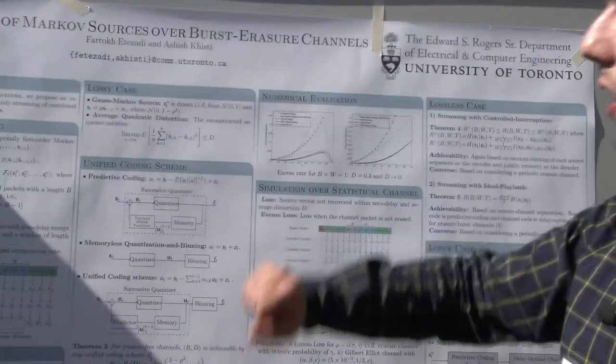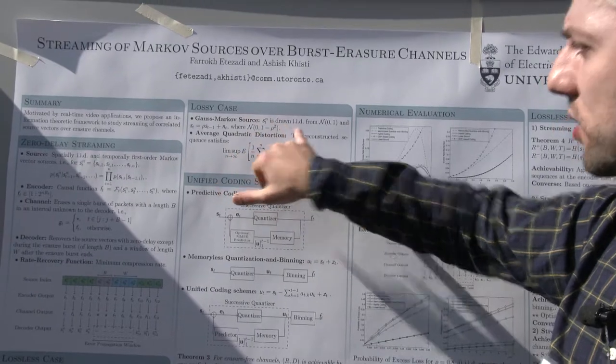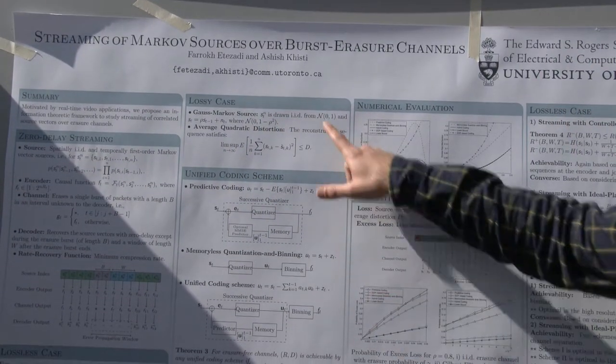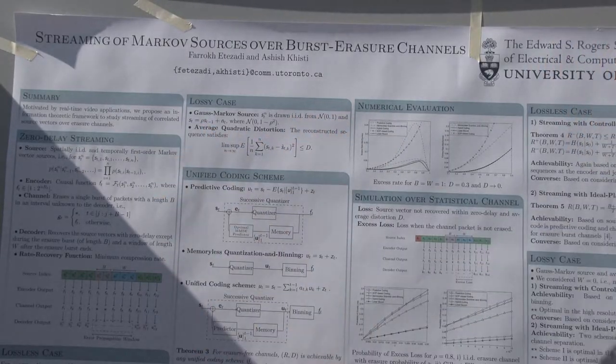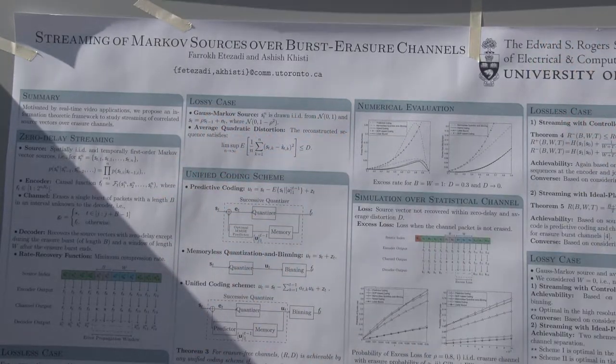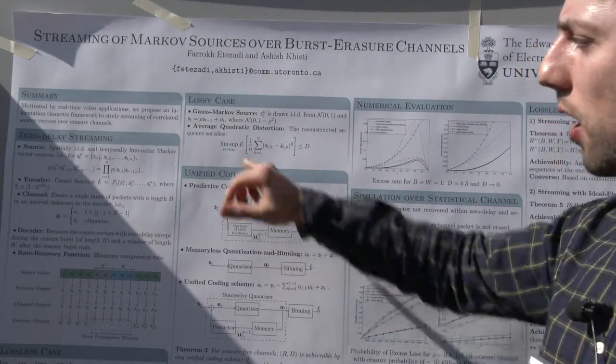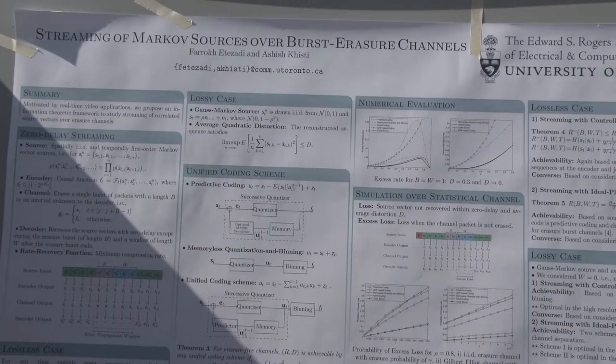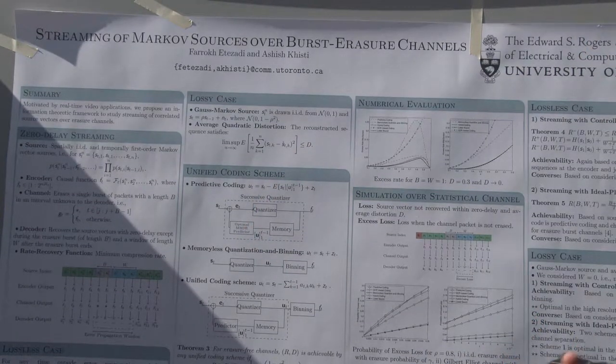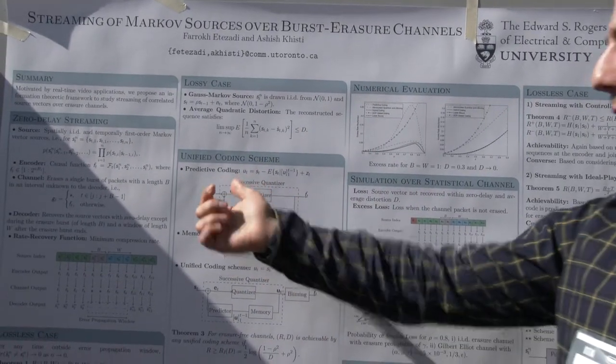One interesting part of this poster is the lossy case where we consider the Gauss-Markov source. The source at each time is drawn IID from a zero mean and unit variance Gaussian random variable, and over time it's correlated using this equation here, which is the Gauss-Markov source. The decoder is interested in reconstructing the source vector within an average distortion of d. In order to present our coding scheme, we first go over some baseline schemes. Let's consider predictive coding.